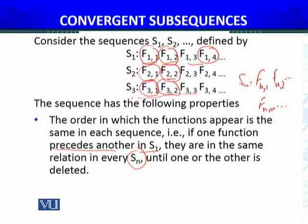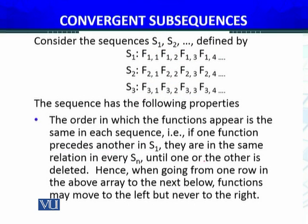For example, F1,4 is ahead of F1,3. In every sequence S1, S2, S3 that we have constructed, F2,4 will be ahead of F2,3, and so forth, until one or the other is deleted from the sequence. Hence, when going from one row in the above array to the next below, functions may move to the left but never to the right. If we delete some functions, they may move left, but they cannot move right. That is the construction.